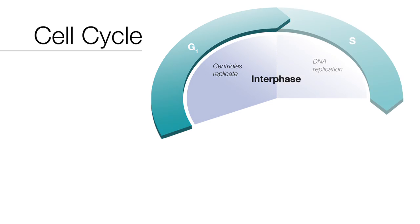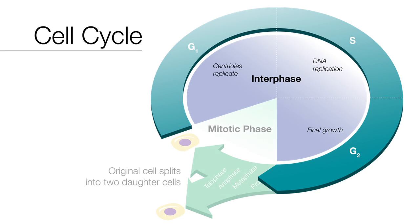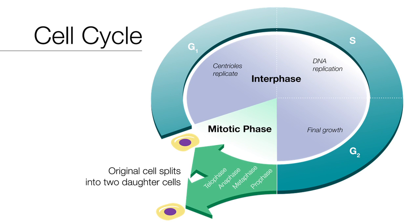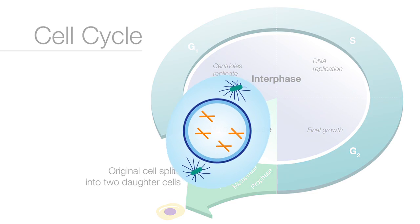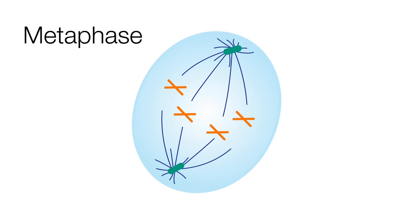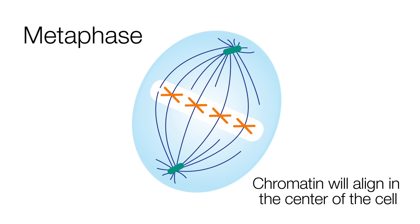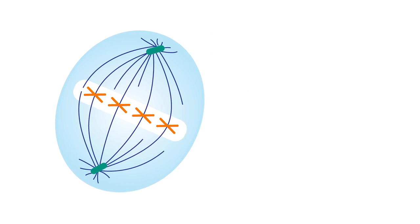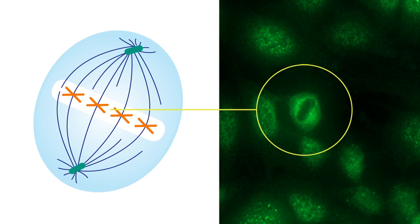Remember, in the cell cycle, mitosis is a short period of time when the cell is dividing. Metaphase is a time in cell division where the chromatin is highly condensed and aligned in the center of the cell. So for pattern confirmation, you examine the chromatin region of your metaphase or dividing cell. In a fine speckled ANA-IFA, the chromatin region of the dividing cell won't fluoresce.